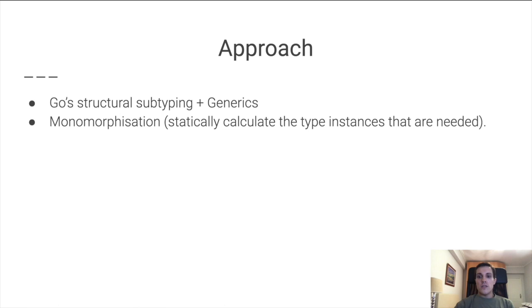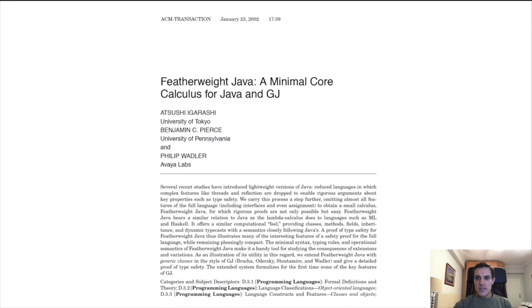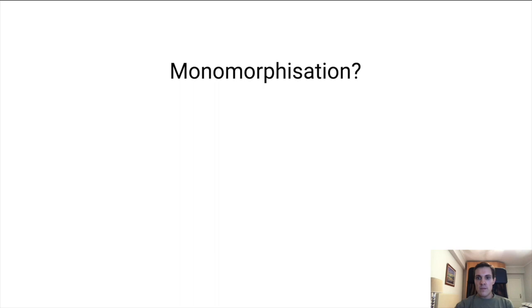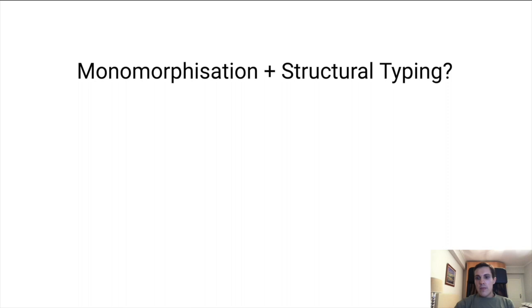Considering the existing works in this space, obviously Featherweight Java was something quite present in our minds. But when thinking about monomorphization, especially in an academic setting, very few formal studies on this topic exist. You can have a look at our paper for a more extended discussion. Really, if you think about the combination of monomorphization with structural typing or subtyping as it exists in Go, this combination is quite absent from the literature of statically typed languages.